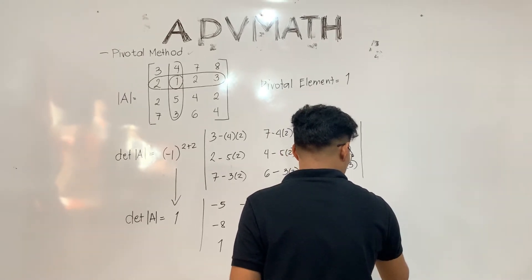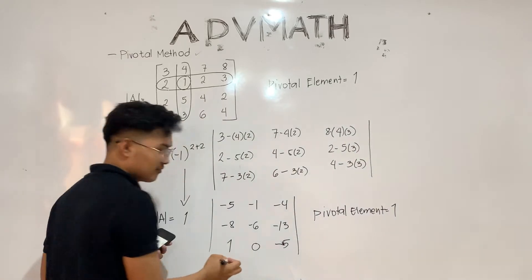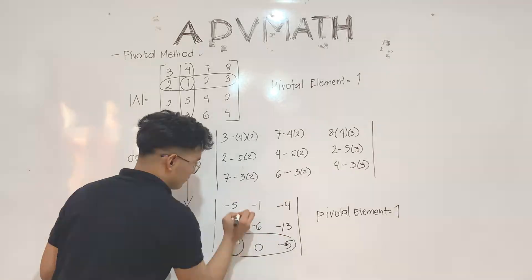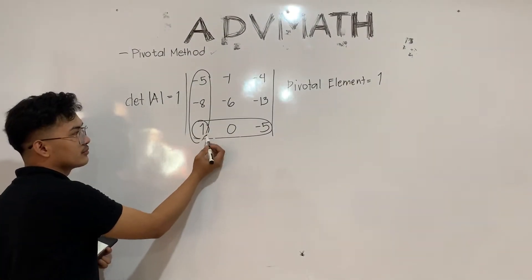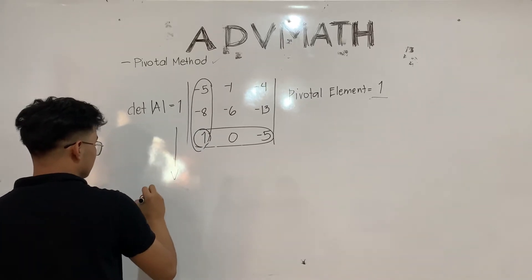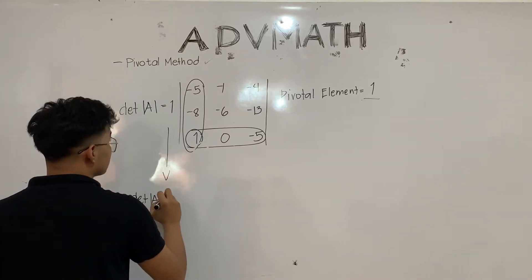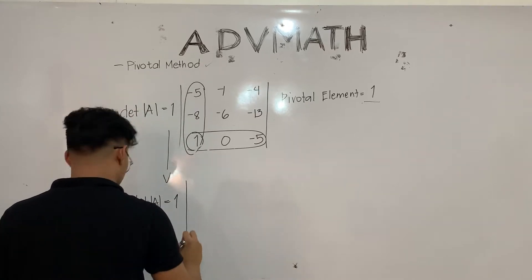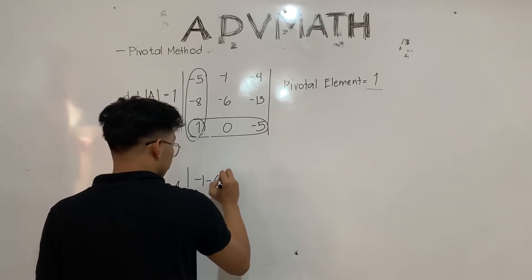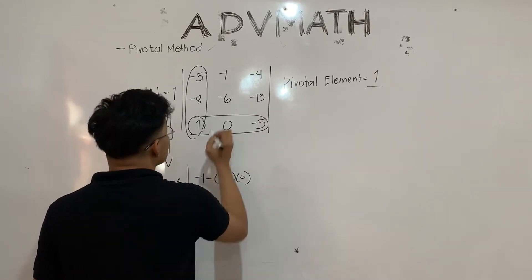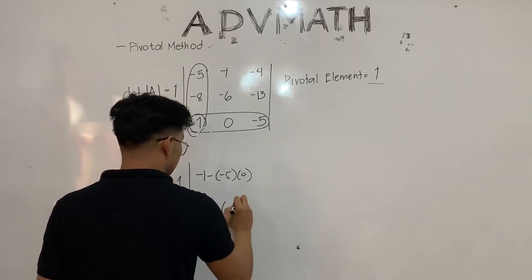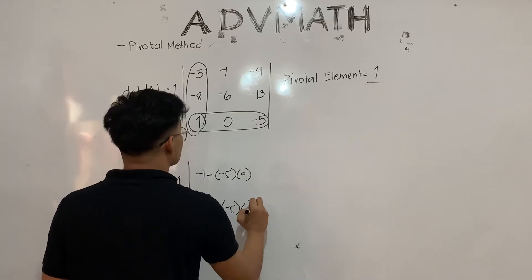We now have a 3 by 3 matrix, and we will use the pivotal method again to get the determinant, choosing the element 1 as the pivot. We will repeat the process — subtracting the remaining numbers from the product of the elements in the pivotal rows and columns that intersect those numbers. Double check the numbers again.